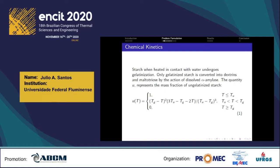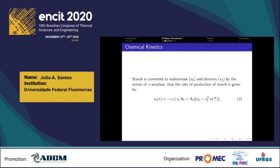Starch needs to be gelatinized so that it can be converted to dextrins and maltotriose by the action of alpha amylase. The quantity U represents the mass fraction of ungelatinized starch. Below T subscript U, all starch is ungelatinized, and above T subscript T, all starch is gelatinized. Within these thresholds, the mass fraction of ungelatinized starch is obtained by the following relation. In the chemical kinetics, starch is converted to maltotriose and dextrins by alpha amylase; the rate of production of starch is given by an equation where the coefficient gamma 5 corresponds to the mass fraction of starch consumed per mass of maltotriose produced. The coefficients A5 and A2 will be explained in following slides.